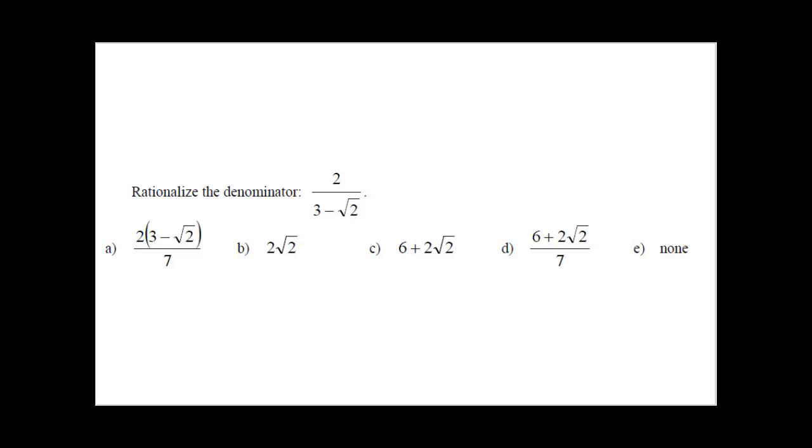Rationalize the denominator: 2 over 3 minus radical 2. Suni, what do you think we should do first? I'm not sure.